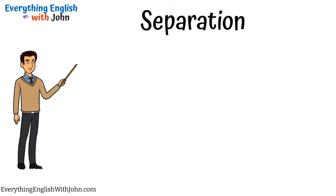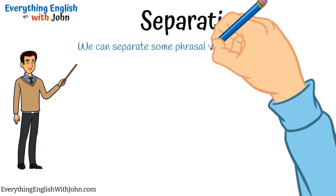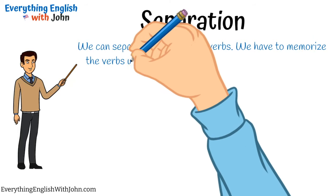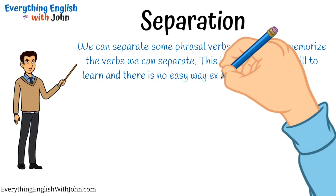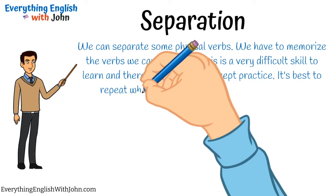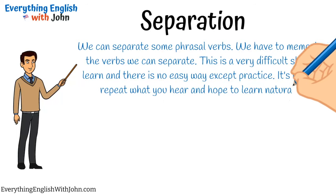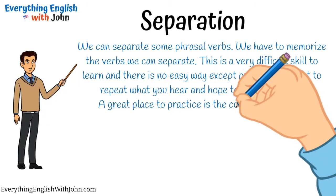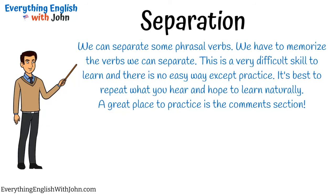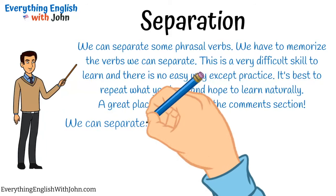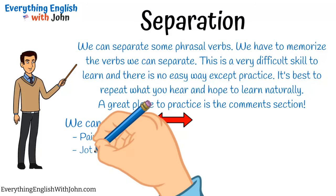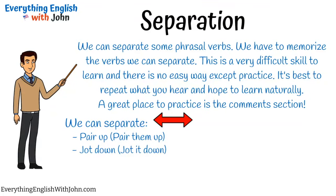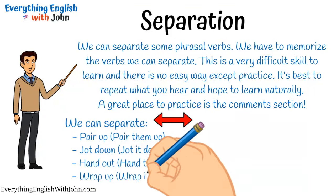Separation: We can separate some phrasal verbs, but we have to memorize which ones. This is a very difficult skill to learn, and there's no easy way except practice — it's best to repeat what you hear and learn naturally. A great place to practice is the comment section. We can separate: 'pair up' → 'pair them up'; 'jot down' → 'jot it down'; 'hand out' → 'hand them out'; 'wrap up' → 'wrap it up.'